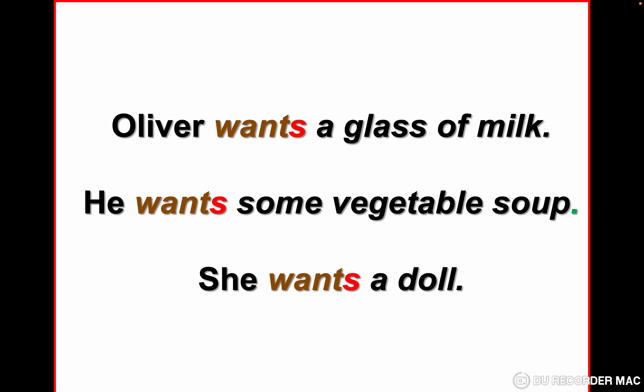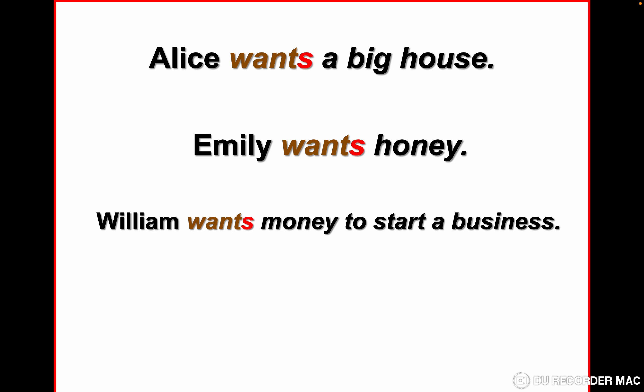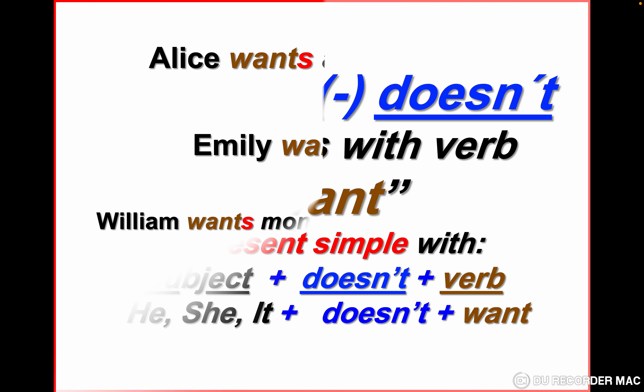More positive sentences with the verb 'want'. Oliver wants a glass of milk. He wants some vegetable soup. She wants a doll. With Oliver, he, and she, we have 's' at the end. More examples: Alice wants a big house. Emily wants honey. William wants money to start a business.